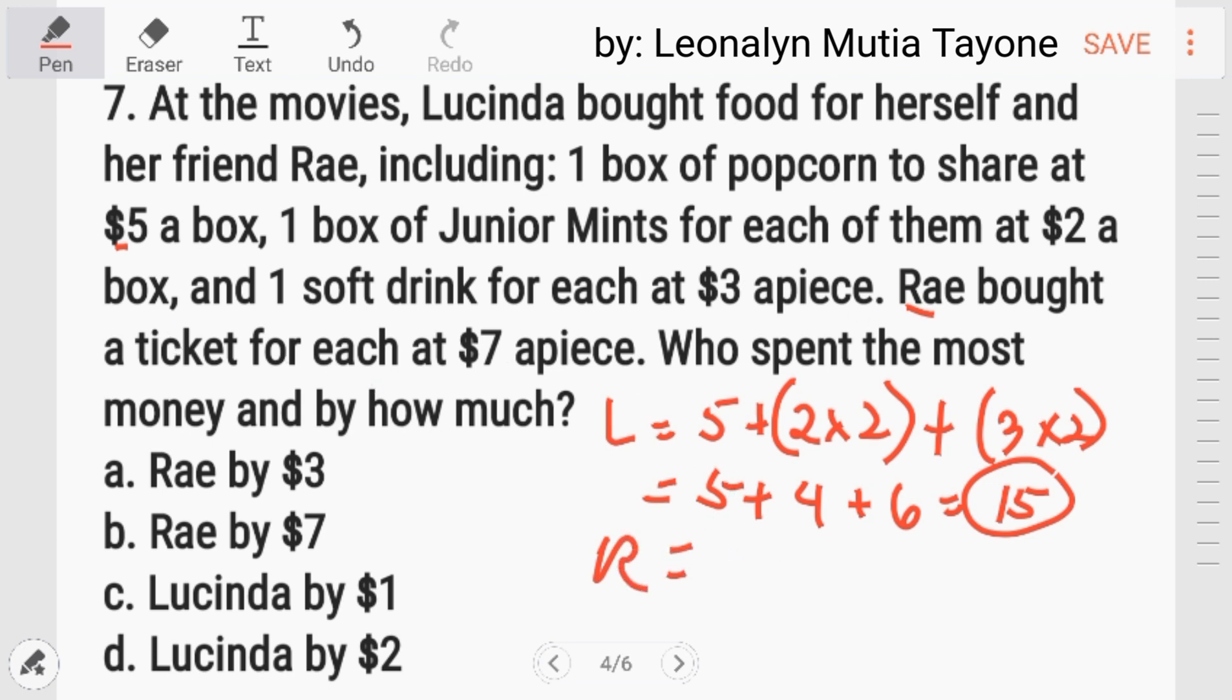Ito namang si Rai bought a ticket for each at seven. Dalawa sila each man. So, seven times two equals fourteen. Who spent the most money? Mas marami ang na-spent ni Lucinda. Fifteen man sa kanya kaysa itong isa fourteen lang. So Lucinda, at saka fifteen minus fourteen equals one. So, the answer here is letter C. Lucinda, buy one dollar. Who spent the most money? Lucinda. Buy how much? Buy one dollar.